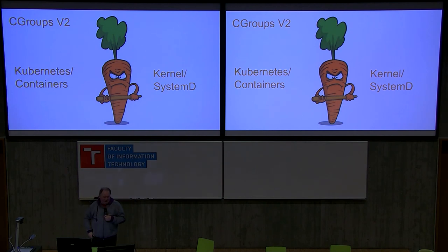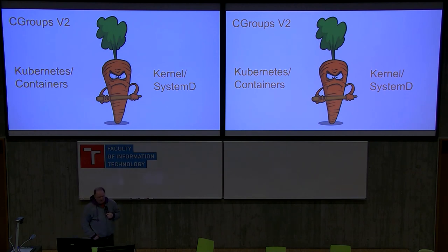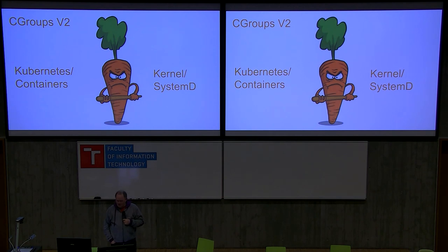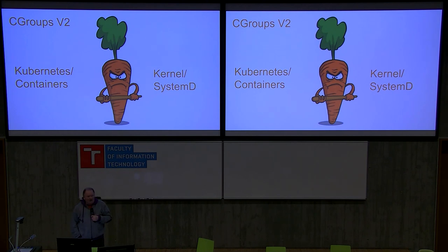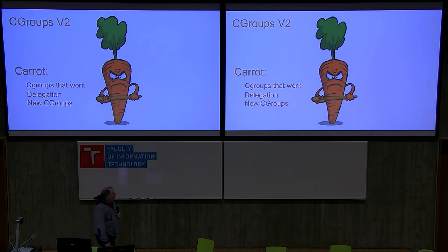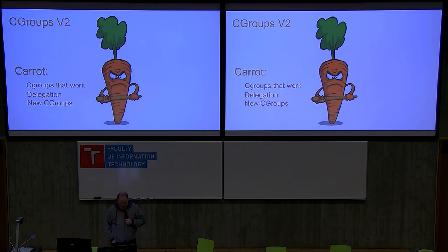The kernel and systemd have said they won't take any more patches on CGroups V1 because it's broken architecture, and they're adding lots of new features to CGroups V2. SystemD is fully embracing these. But the Kubernetes world is all written to the CGroups V1 architecture. If we turn on CGroups V2 by default in distributions, all of a sudden every container in the world won't work. Containers are important enough now that leading distributions would not think of turning it on. Because of that, Kubernetes and containers have sat fat, dumb, and happy with no reason to evolve. So we needed a carrot and a stick.